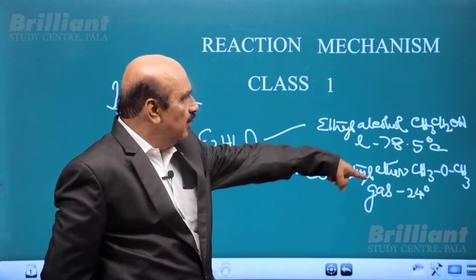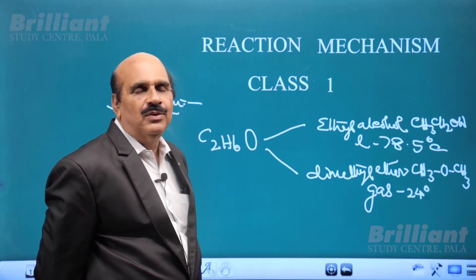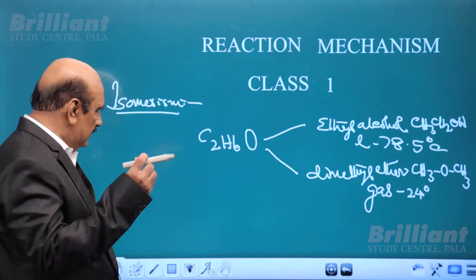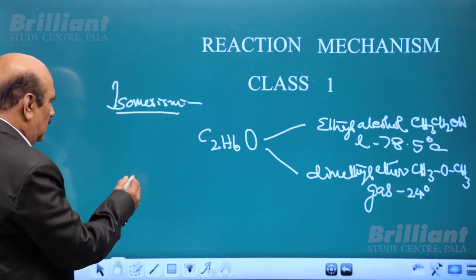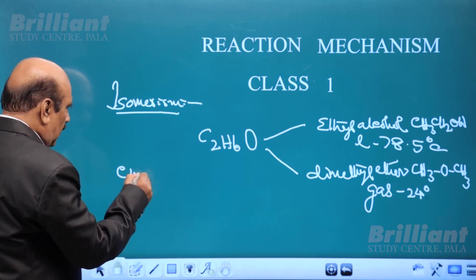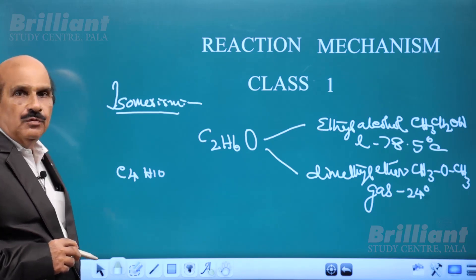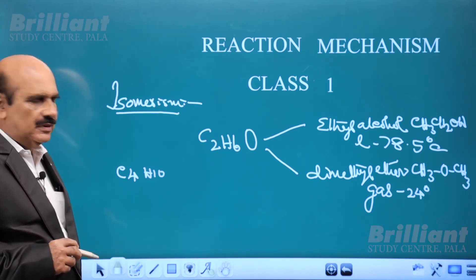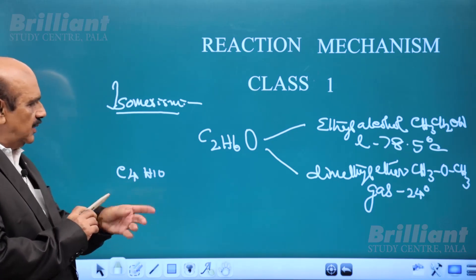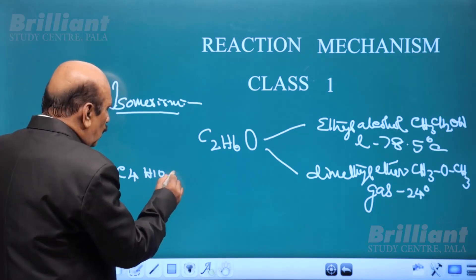These two compounds are called isomers and this phenomenon is called isomerism. Another example: a compound with molecular formula C4H10, that is butane. It is a hydrocarbon having only carbon and hydrogen — four carbon atoms and ten hydrogen atoms. There are two butanes.